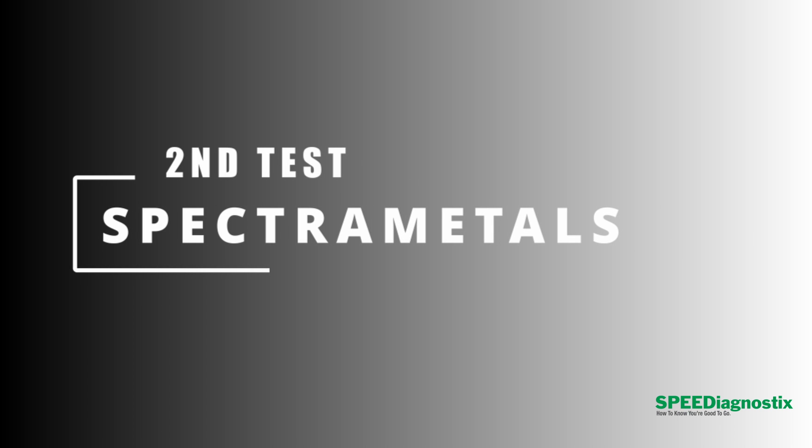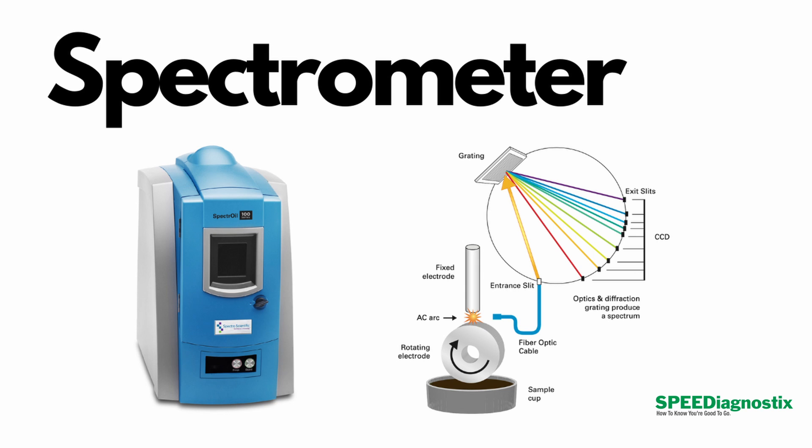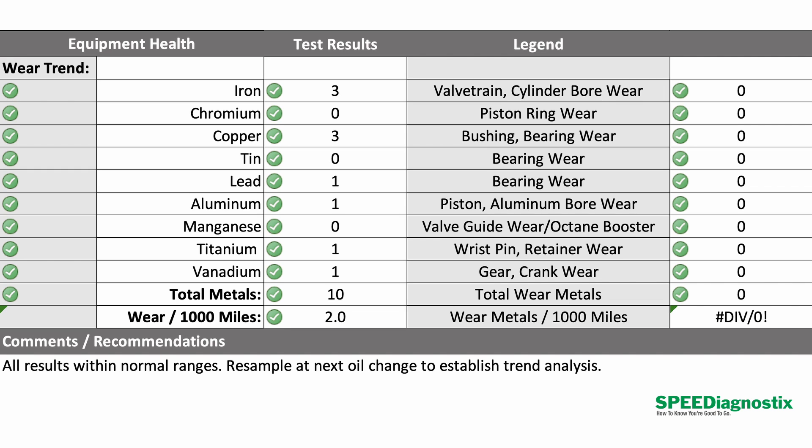The second test is spectral metals analysis. That's where we're going to see the additives and any wear metals in the oil. What we do is actually burn the oil — when you burn the oil, all the atomic elements in the oil emit wavelengths of light. We use a spectrometer to absorb all those different wavelengths of light to determine what's in the oil and how much there is of it. The spectral metal analysis tells us the additive levels and the wear metal levels.